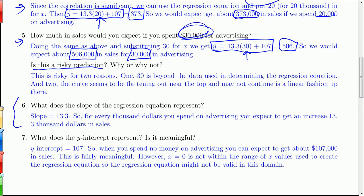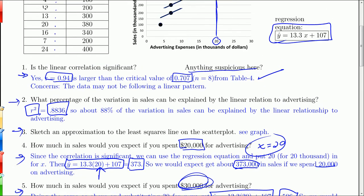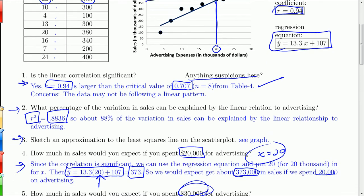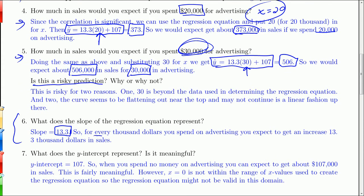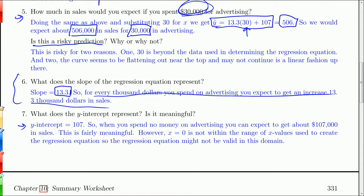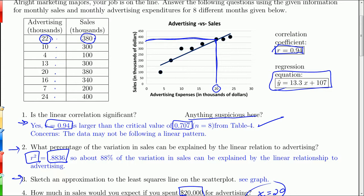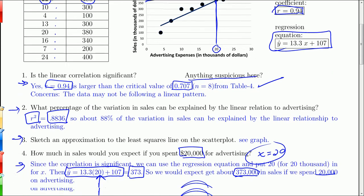What does the slope of the regression equation represent? The slope is 13.3. What that means is if you increase advertising by one unit or $1,000, you can expect $13,300 increased in sales. What does the y-intercept represent? It's 107. Basically what that says is if you spend no money on advertising, you can still expect about $107,000 in sales. That's somewhat meaningful, though we've never spent anywhere down near zero before.